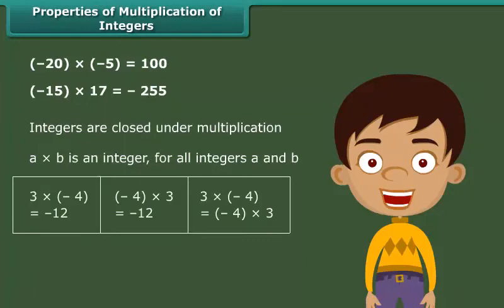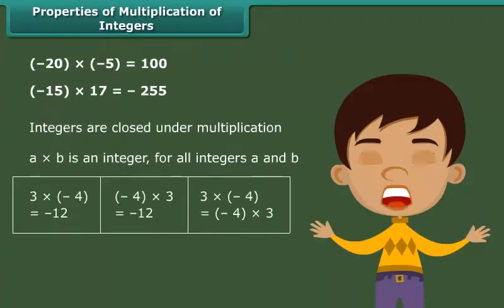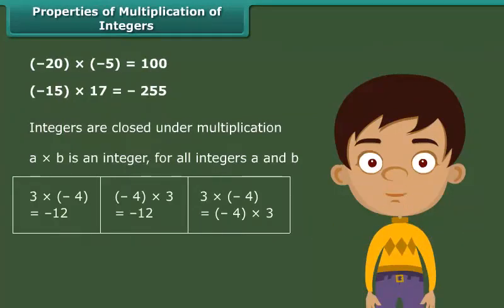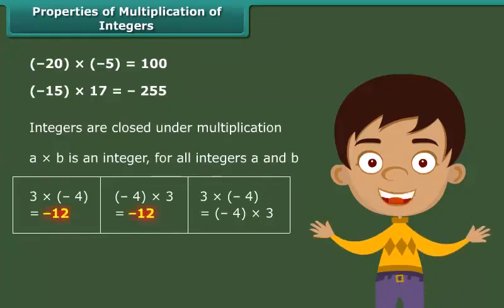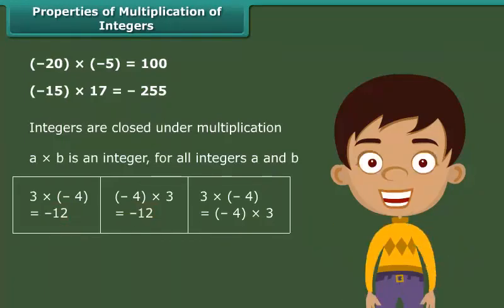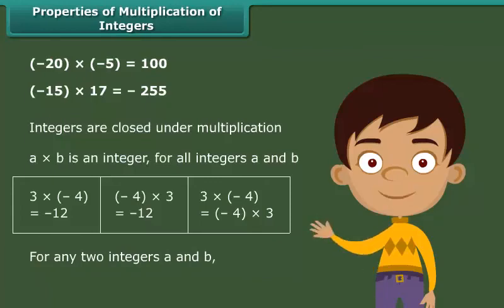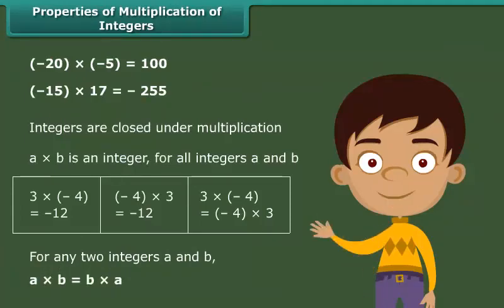Now observe this example. We can say that 3 into minus 4 is equal to minus 4 into 3. Therefore, multiplication is commutative for integers. In general, for any two integers A and B, A into B is equal to B into A.